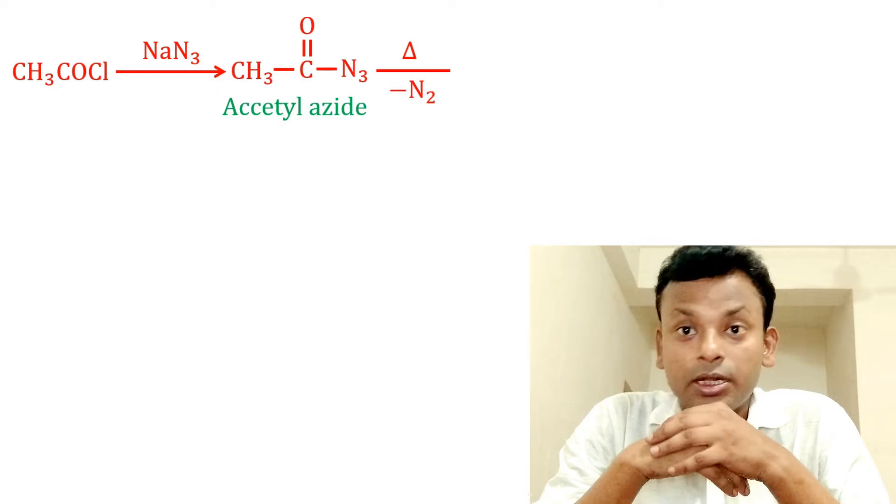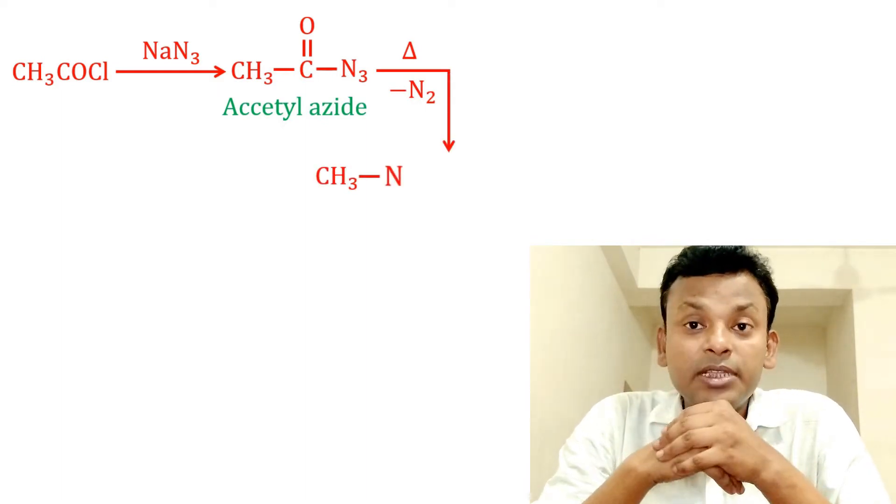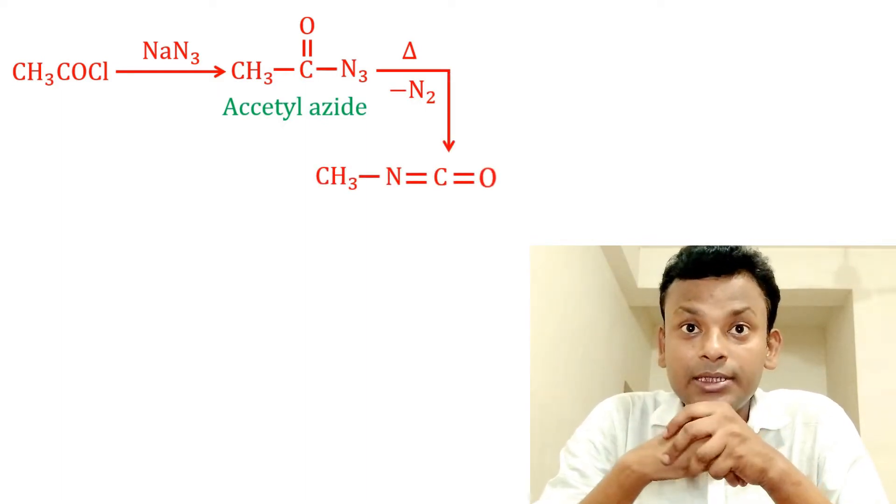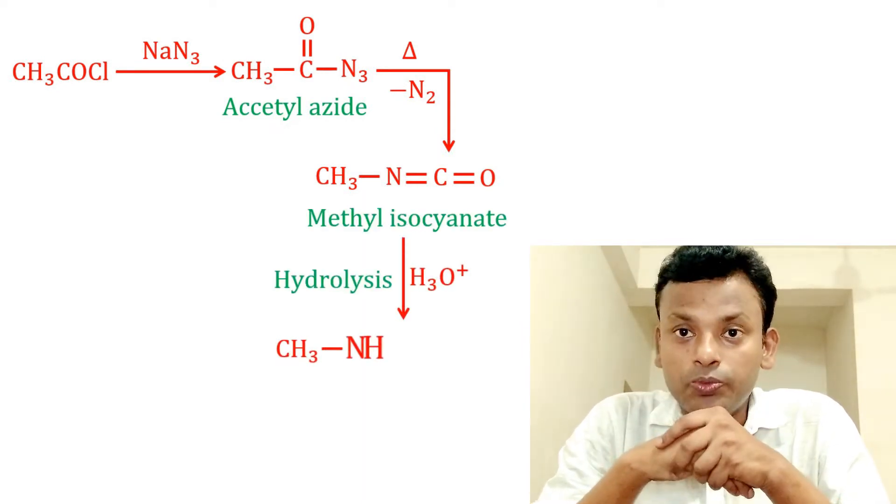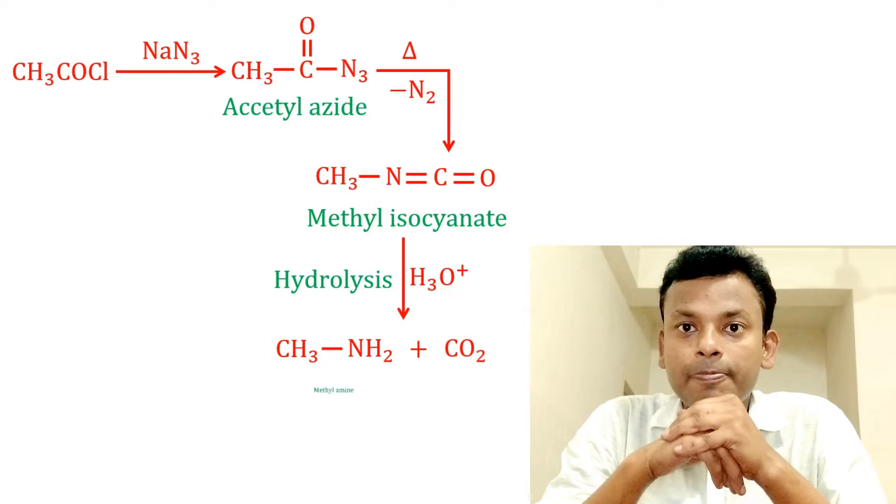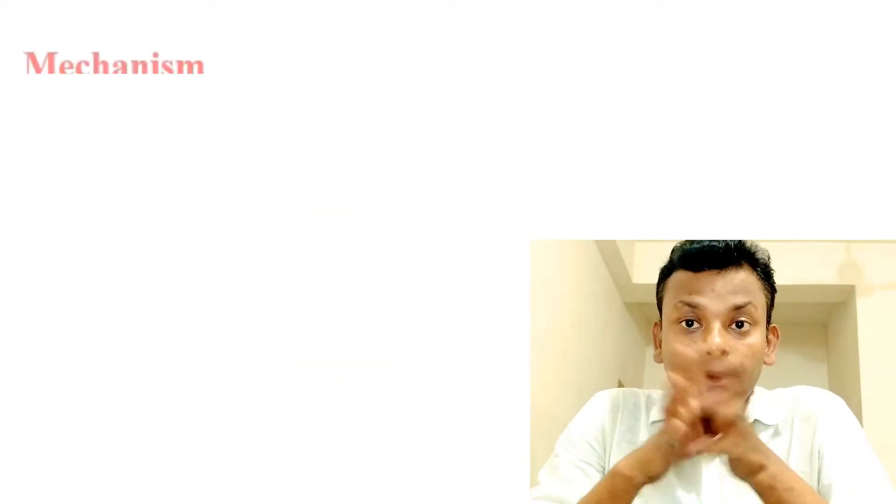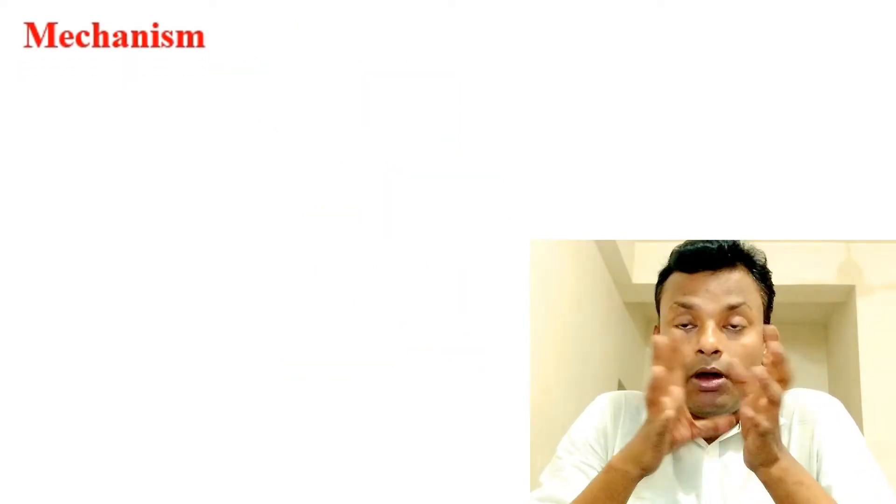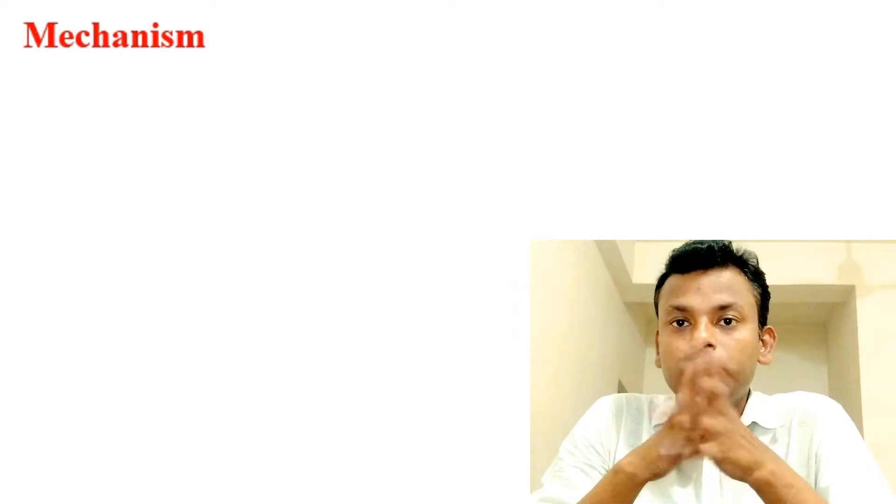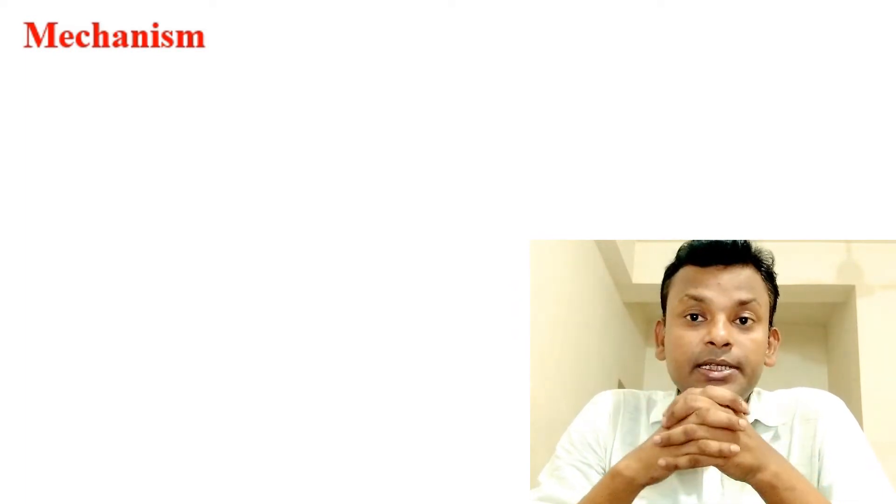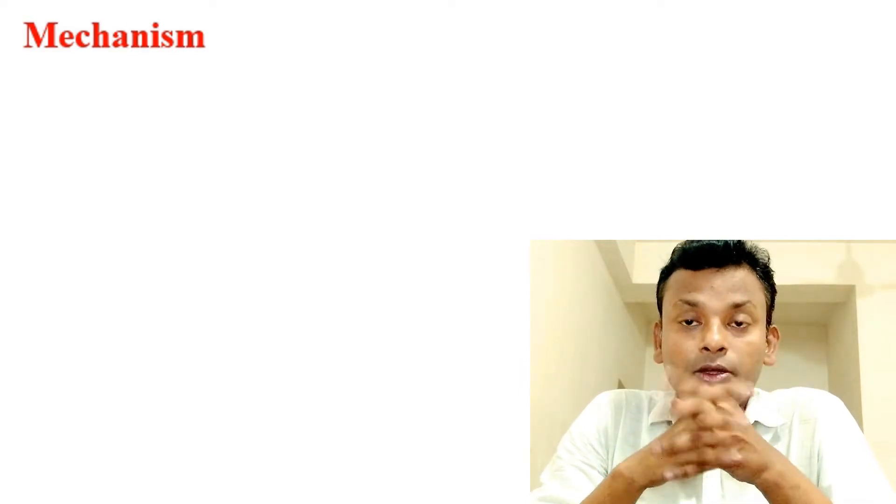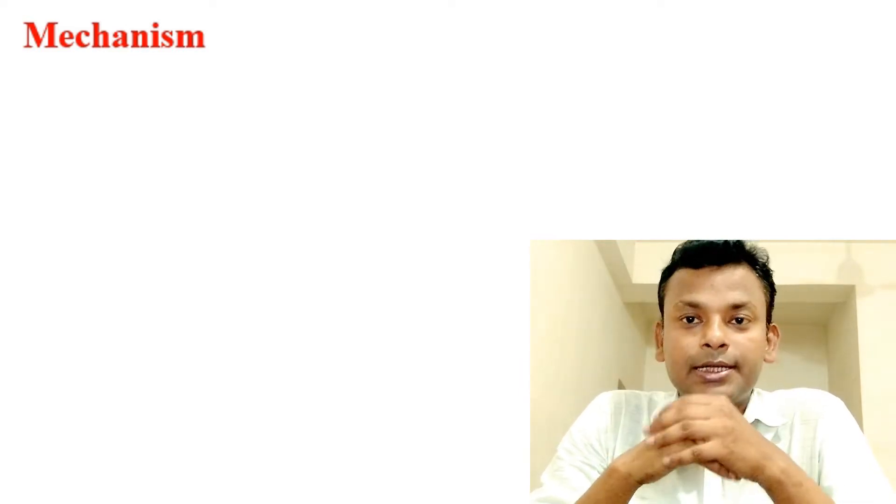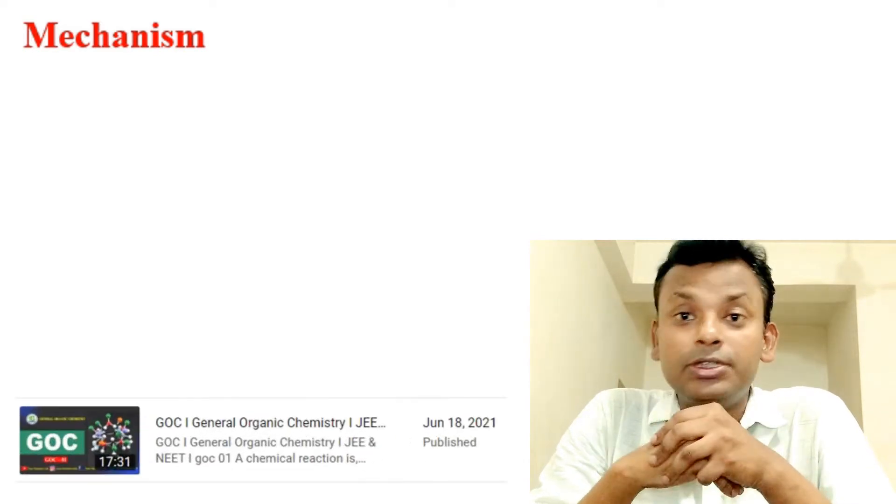Heat with loss of nitrogen gives methyl isocyanate, and then hydrolysis gives methylamine and CO2. Mechanism of Curtius rearrangement: the intermediate step is nitrene. We already discussed nitrene in the video of GOC, general organic chemistry.